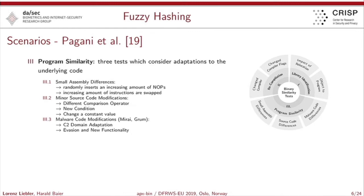The third subtask is the malware code modification task for two malware samples: Mirai for the Linux world and Gram for the Windows world. In those cases, they adapted the command-and-control domain information inside of the binary, introduced evasion features like anti-VM and anti-debugging capabilities, and also added new functionality to the malware — for example, extraction of user information from a system.